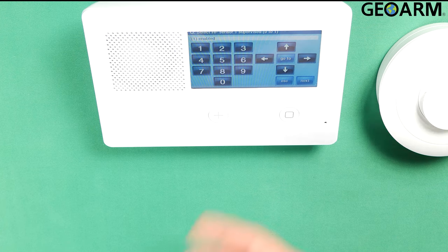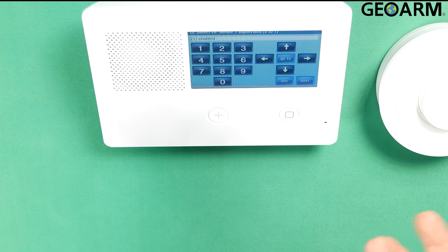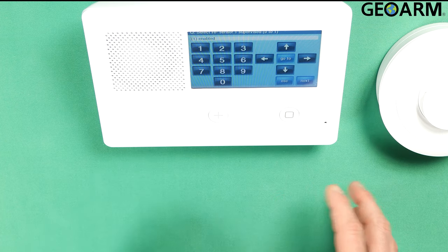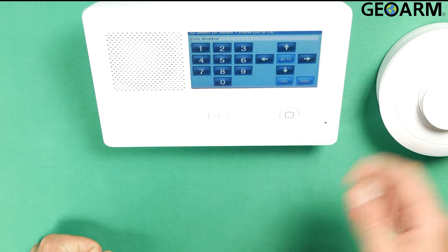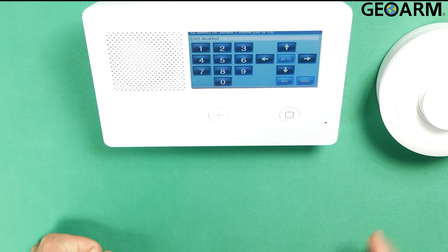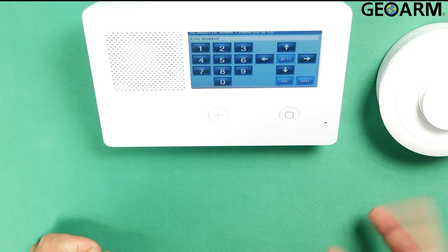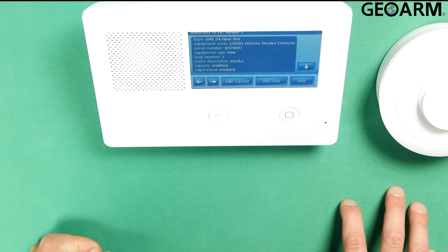Now it wants to know if this device is supervised, meaning that it's checking in with the panel to let it know it's all right. It's got a good battery. It's not falling out of RF supervision. It's not being interfered with. I'm going to leave that because I do want that to happen. So press the down arrow. Now it wants to know if you want to chime this. This is a smoke detector so these devices typically don't chime. So I'm just going to skip that. Press the down arrow.